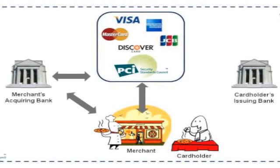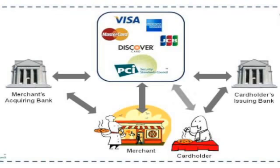The customer has a credit card. By signing the cardholder agreement, the customer agrees to comply with the regulations of the bank and the card brands, including PCI. This bank is called an Issuing Bank because it issued the credit card. The Issuing Bank agrees to comply with the regulations of the card brands, including PCI data security standards.